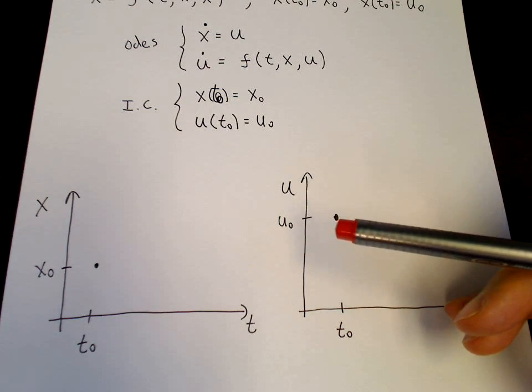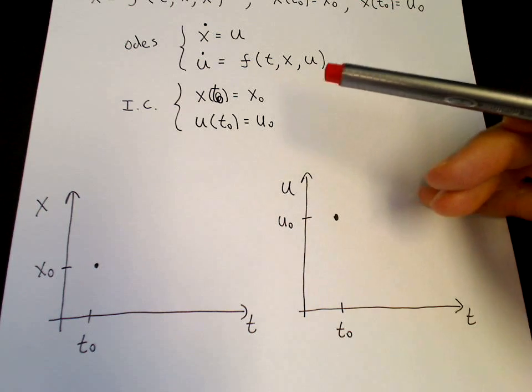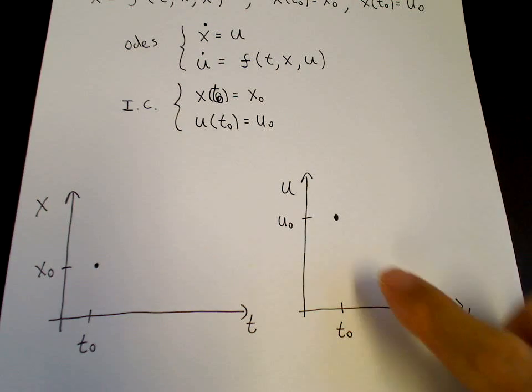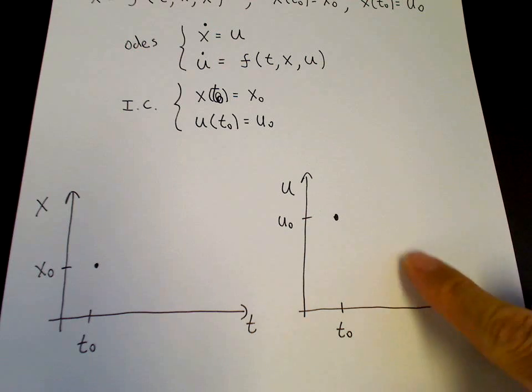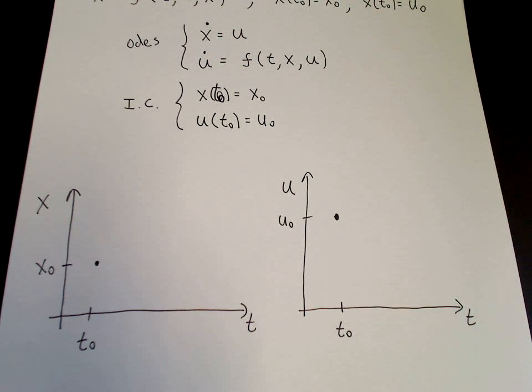And then u naught can be anything because we don't know what this f looks like at t equals t naught. So u naught could be increasing, could be decreasing. We don't know.